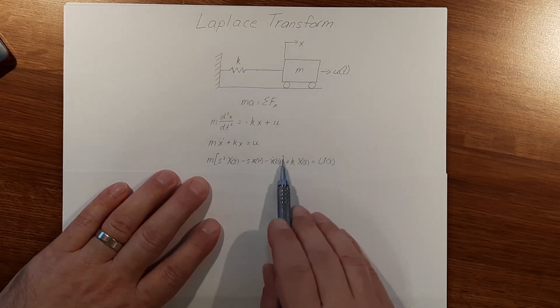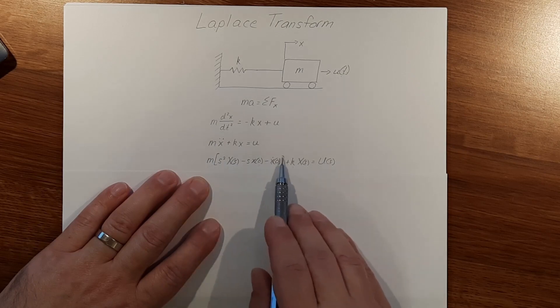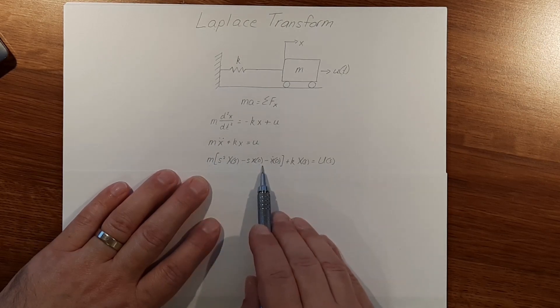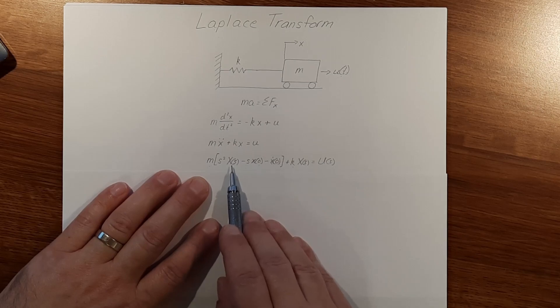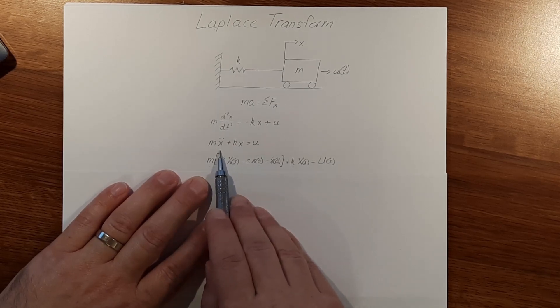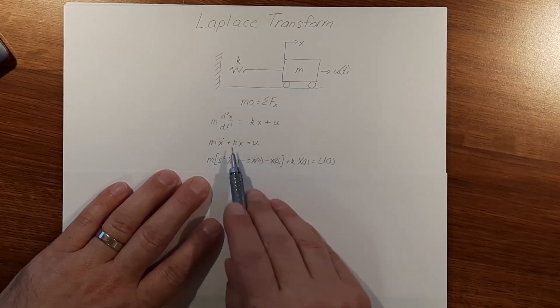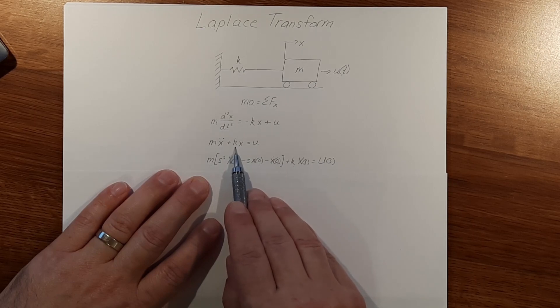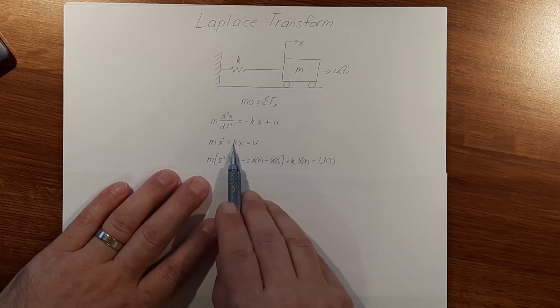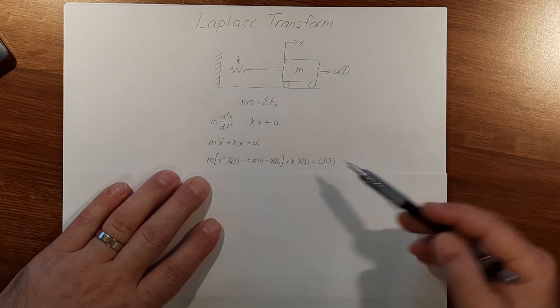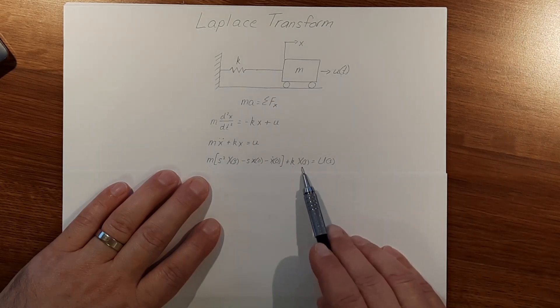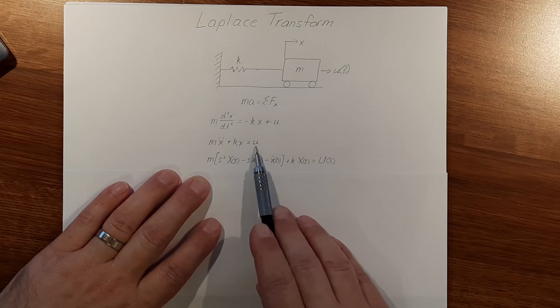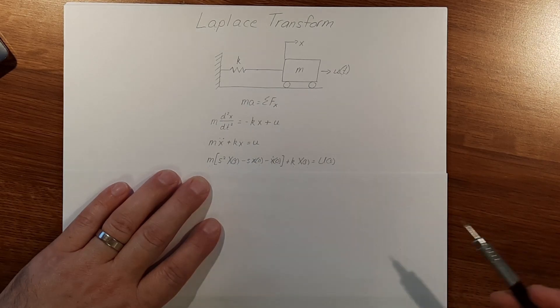All this comes from the chart on the Laplace transforms for the second derivative, which is acceleration. For the x, the k is a constant so it stays the same, but little x turns into big X of s. Then u turns into big U of s.